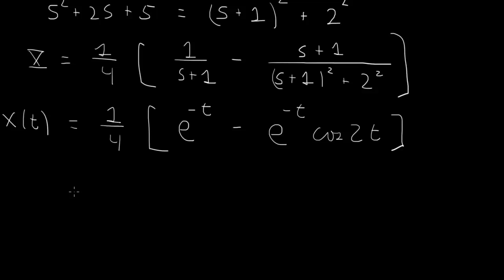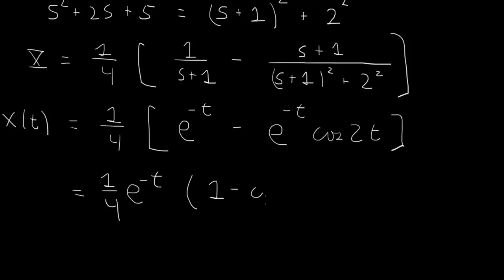Writing this in a nicer way, we factor out the exponential: x(t) equals one-quarter e to the minus t times (1 minus cosine 2t). And that is our solution of the initial value problem.